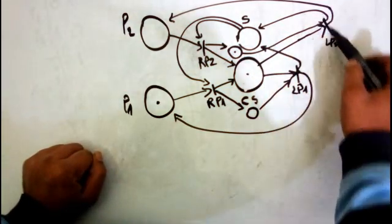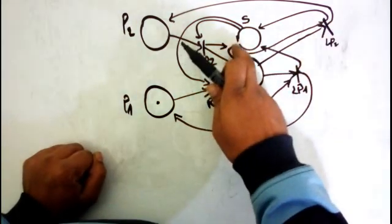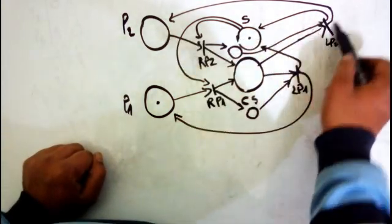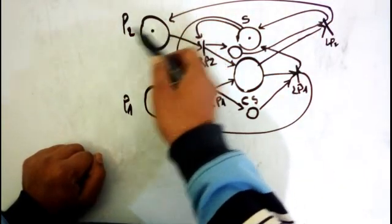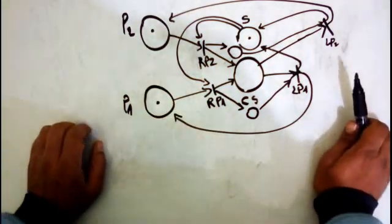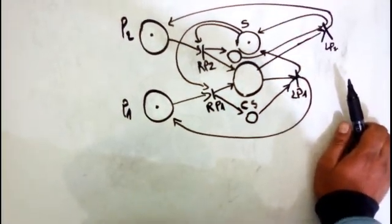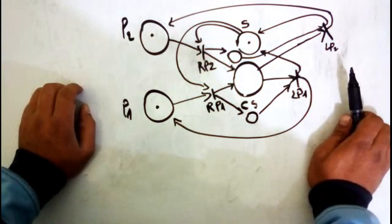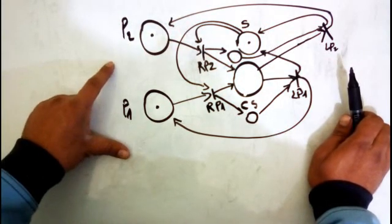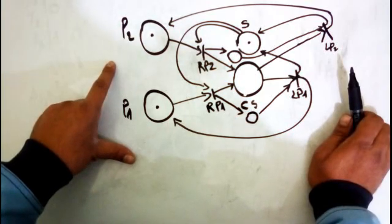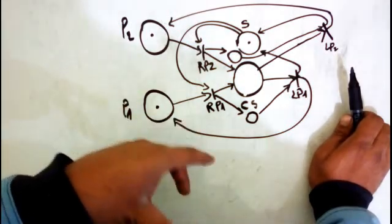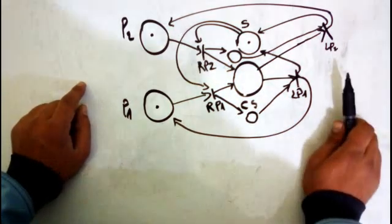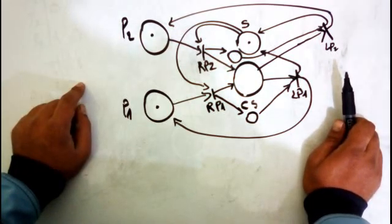The only fireable transition now is 'liberate P2', since 'liberate P1' needs a token in P1's place which is empty. When we liberate P2, we remove the critical section token and P2's place token, return the semaphore token meaning the critical section is free, and return a token to P2's ready place. That's how to model the mutual exclusion critical section system in a Petri Net. If you have any remarks or want clarification, put your comments below.